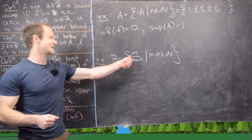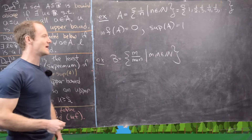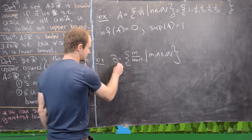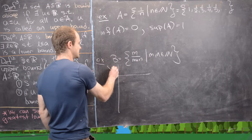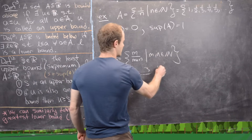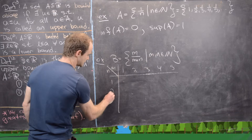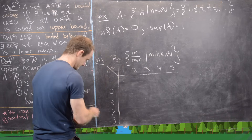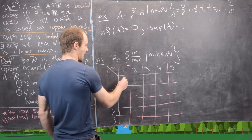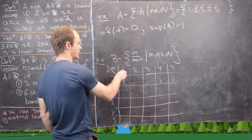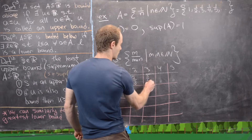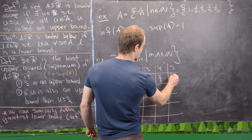Now let's look at the set B of all values m over (m plus n), where m and n range over the natural numbers. Let's make a chart with m on rows and n on columns. Along the first row (m=1): 1/2, 2/3, 3/4, 4/5, 5/6. Down the first column (n=1, m increasing): 1/3, 1/4, 1/5, 1/6. For m=2: 2/4, 2/5, 2/6, 2/7. For m=3: 3/5, 3/6, 3/7, 3/8.